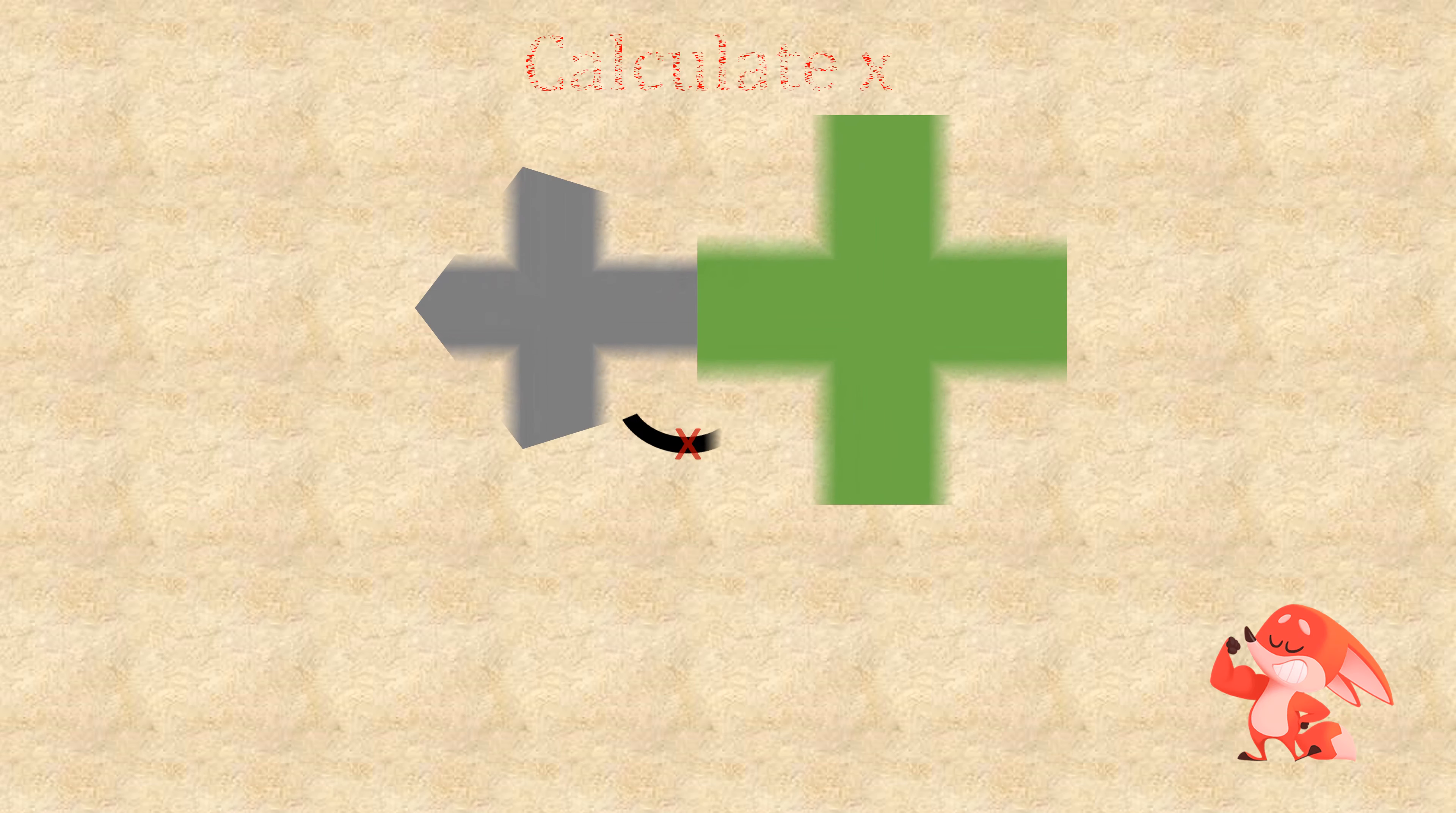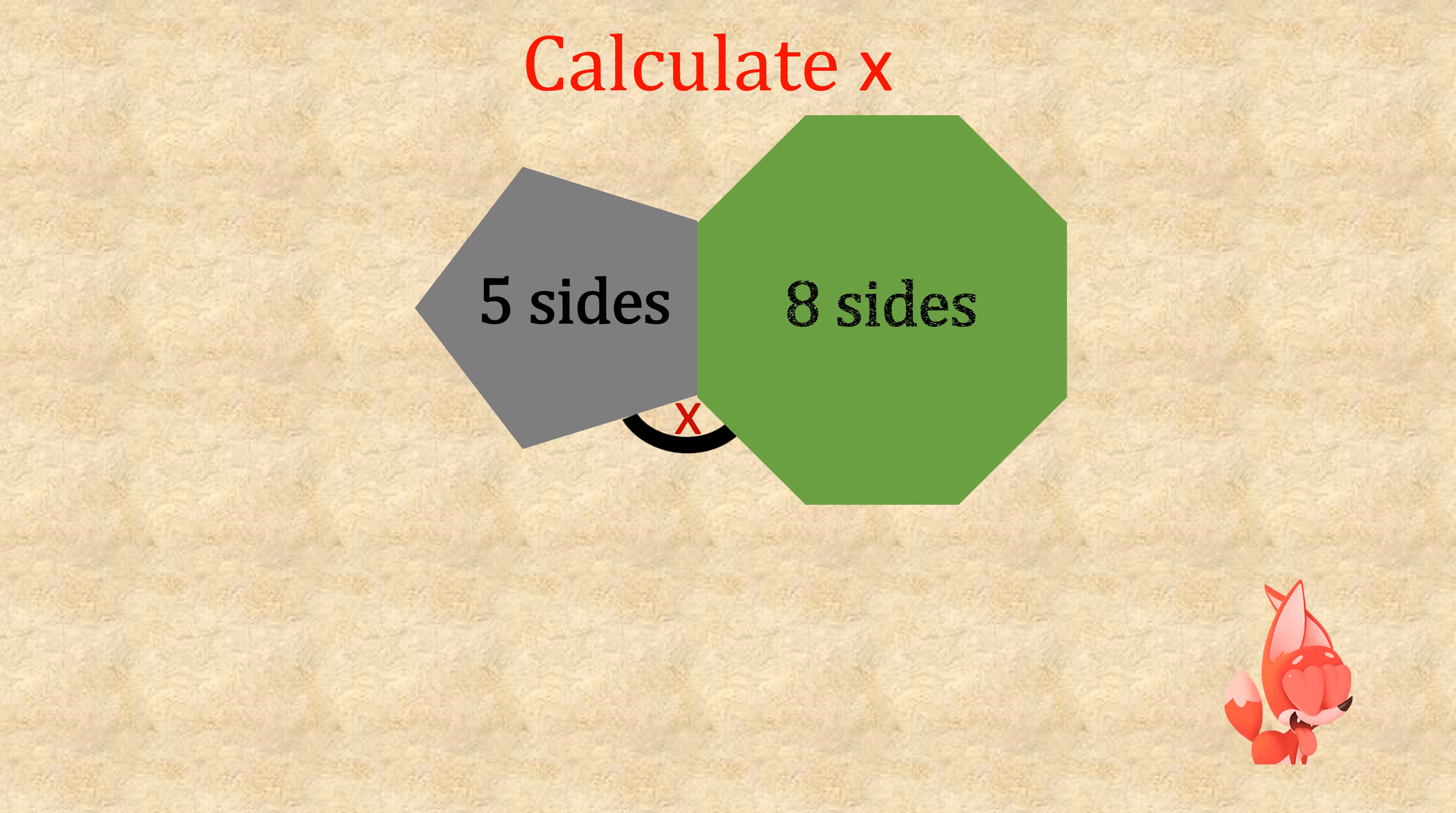Try another with two different sided shapes. Keep it easy with 5: 360 divided by 5 is 72. Then we have 360 divided by 8, which is 45. So we just add them together: 72 plus 45 is 117. X equals 117 degrees.